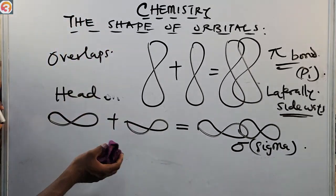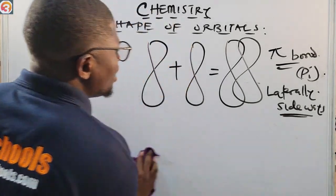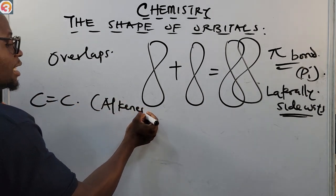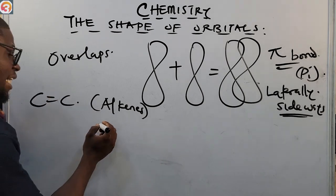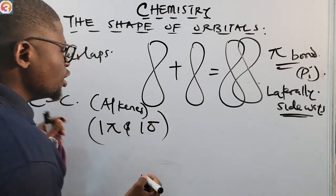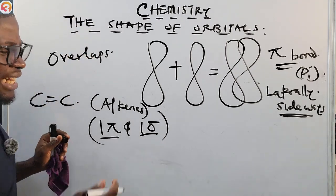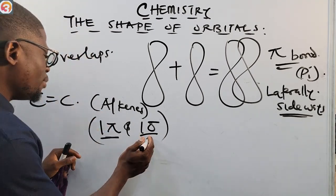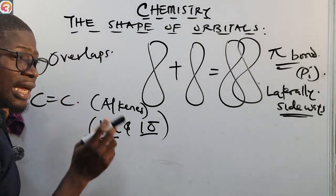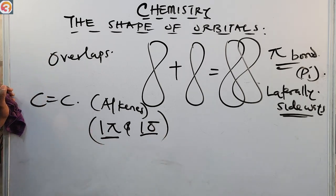The carbon-to-carbon double bond found in alkenes has one pi bond and one sigma bond. During reactions, the pi bond is broken down, but the sigma bond is unaffected, because the sigma bond is much stronger than the pi bond.